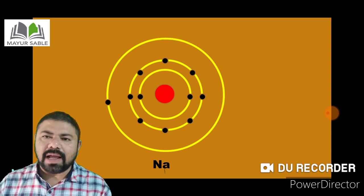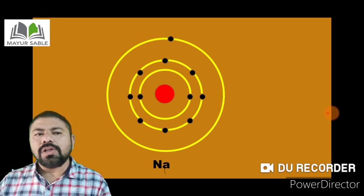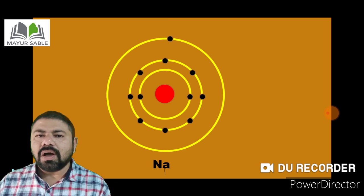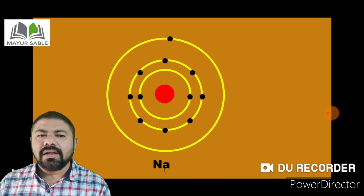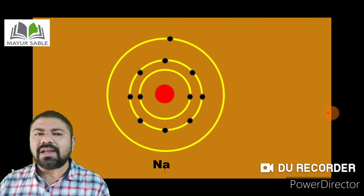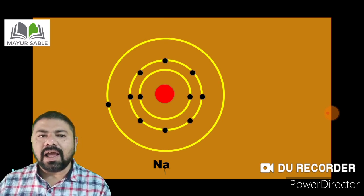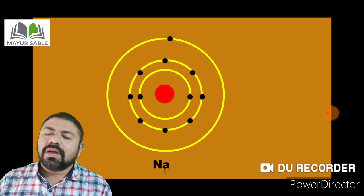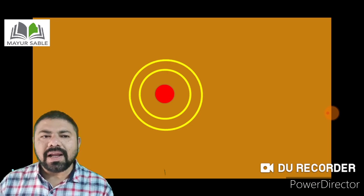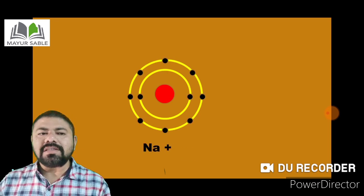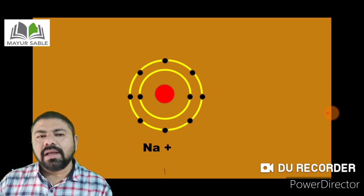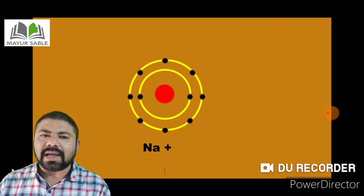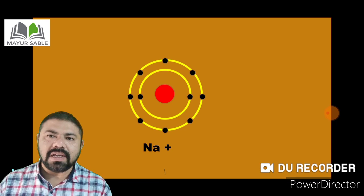The number of valence shell electrons in a metal is small — either one, two, or three — and the effective nuclear charge exerting attractive force on the valence shell electrons is also very small. Due to these two combined effects, metals have a tendency to lose valence electrons to form cations and thereby attain a stable noble gas electronic configuration. This tendency of an element is called electropositivity, which is one of the important metallic characteristics.